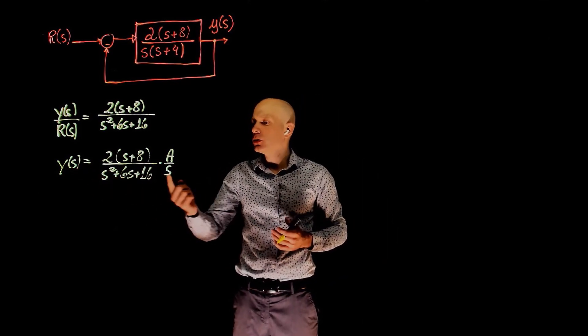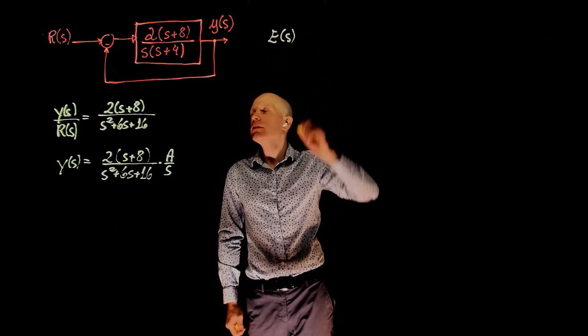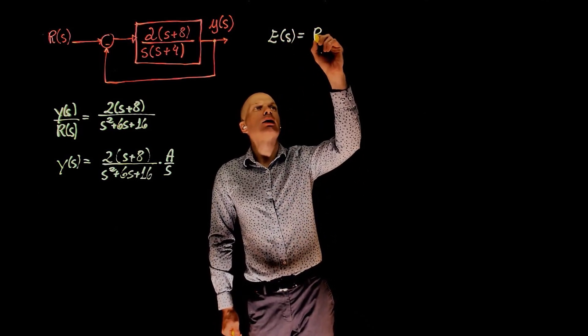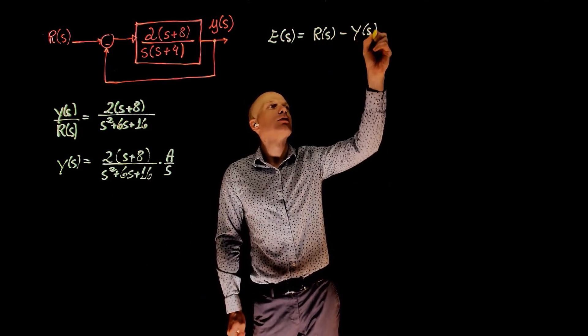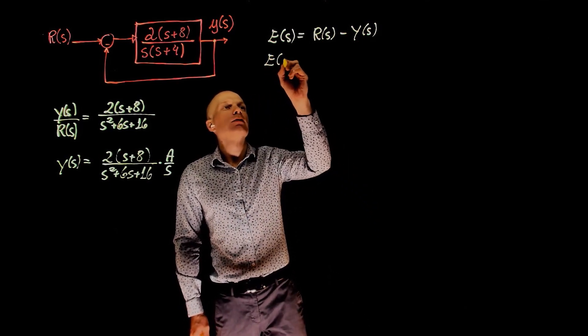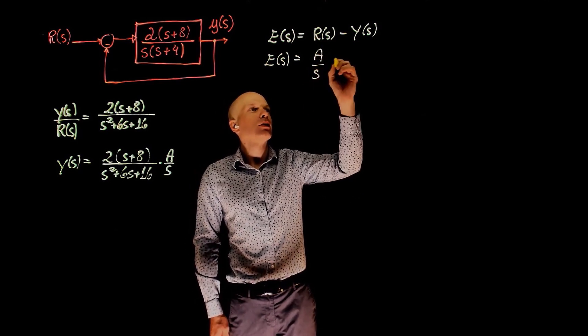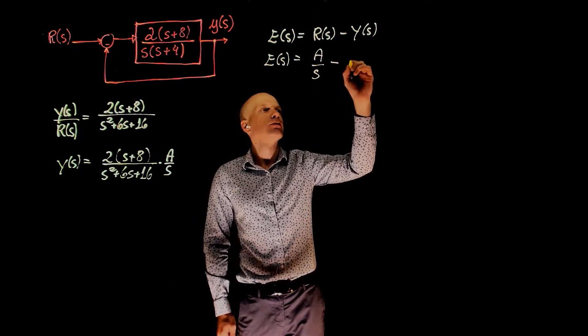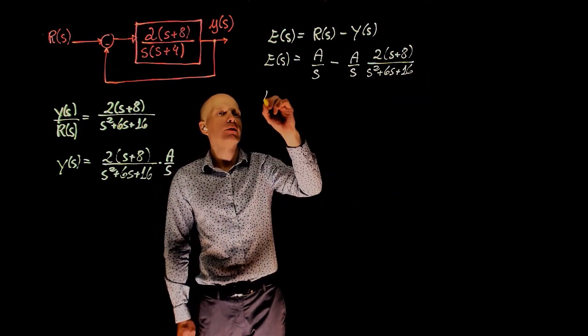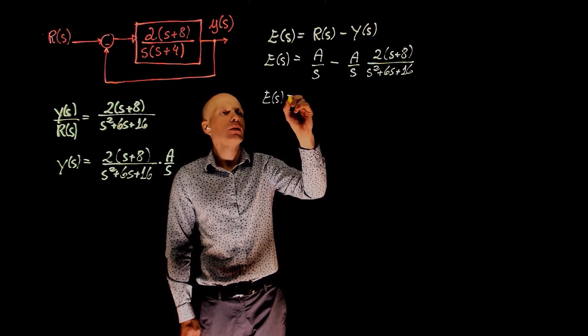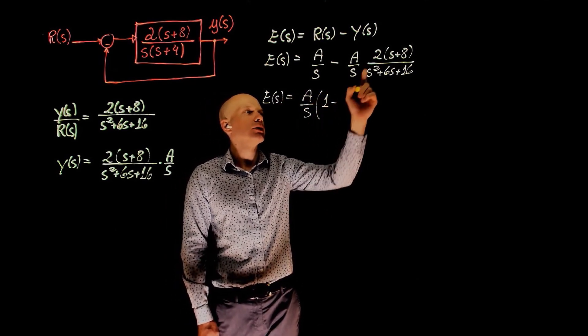Now that we have an expression for the output, when we know the input, we can now define the error as the difference between them. That is the desired output minus the actual output, y of s. The error becomes r of s is a over s, and y of s is this. Here we can factor a over s, so we have a over s, times 1, minus that.